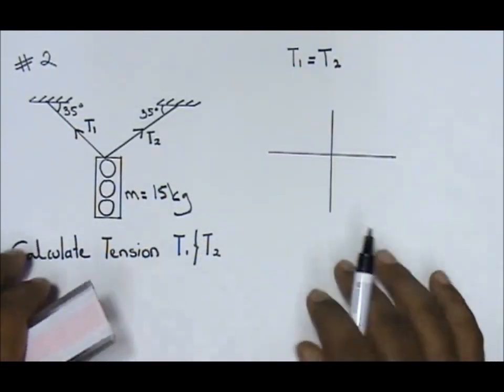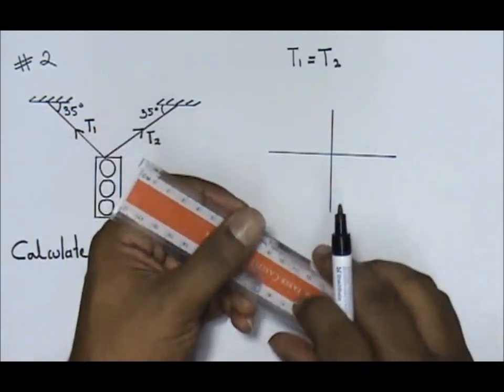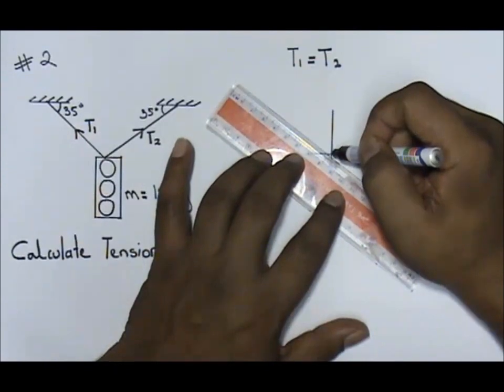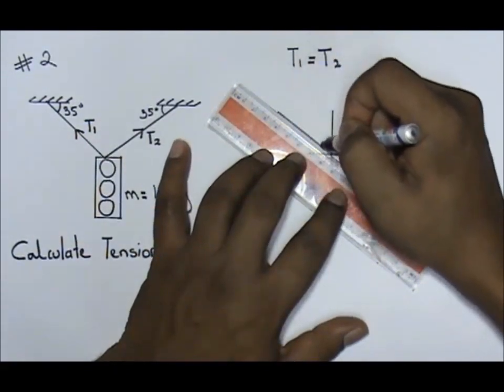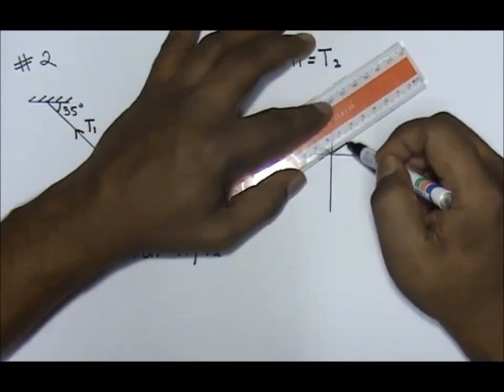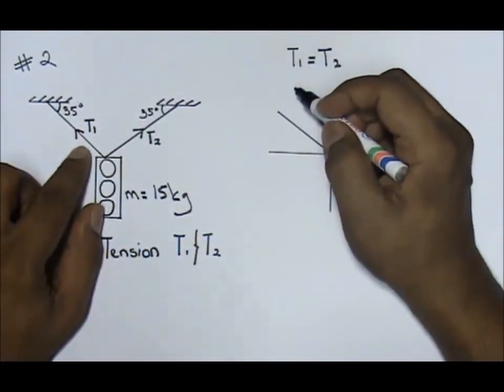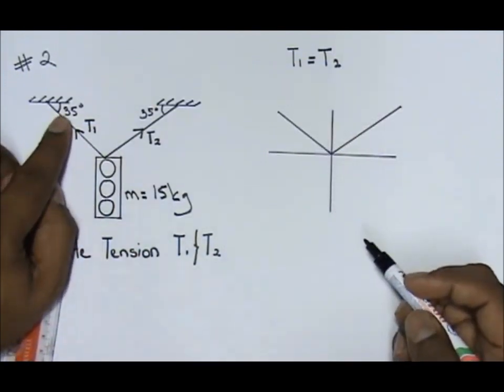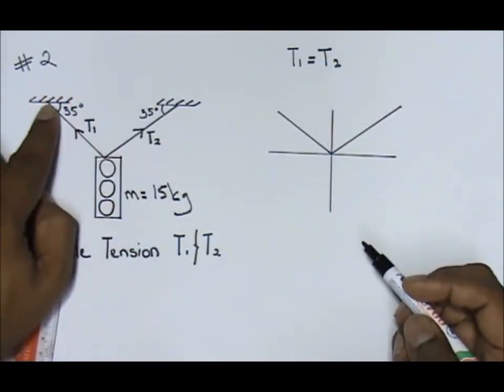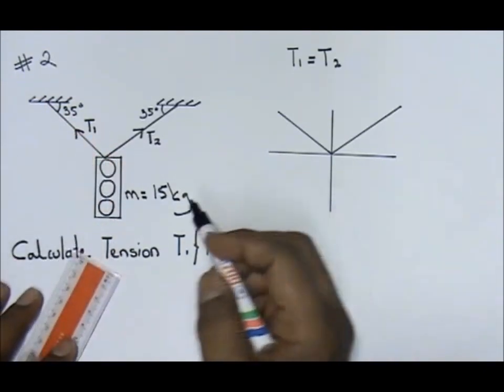If you notice, there are two forces that are actually acting, which is your tension 1 and tension 2. What I want you to do is draw tension 1 and tension 2. If this makes an angle 35, using your mathematics, this is also an angle of 35.